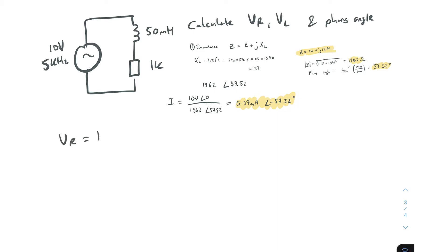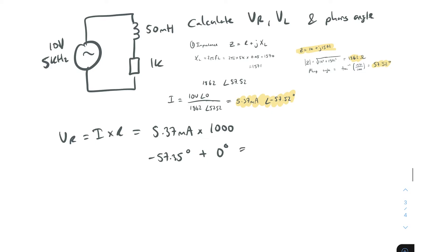Now it's straightforward. The voltage across the resistor VR equals I × R = 5.37mA × 1000Ω. The resistor has no phase shift, so the phase angle stays at −57.35°. That gives us VR = 5.37 volts at −57.35°.